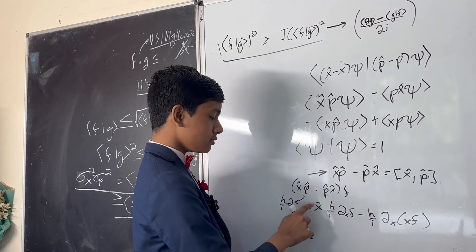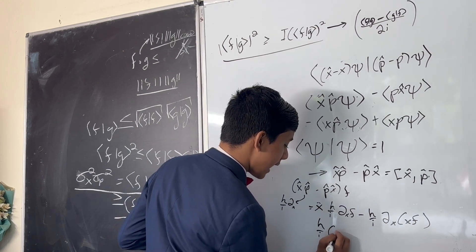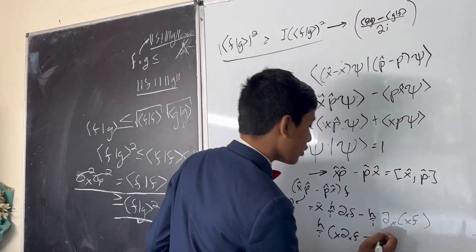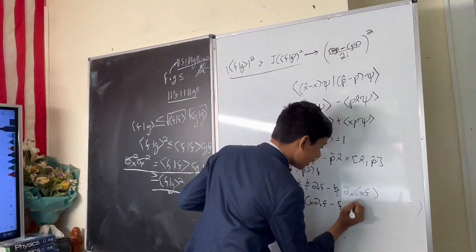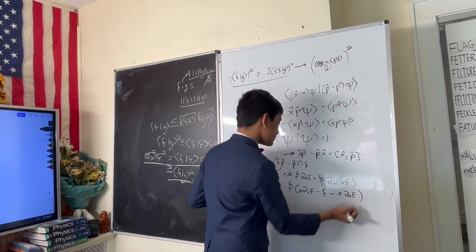And what happens here? Well, you factor out the h over i, and you get x partial x f minus, well, this is just the product rule, so you get f minus x partial x f. And so you cancel these two out, and you get that it's just, well, minus 1 over i is i.